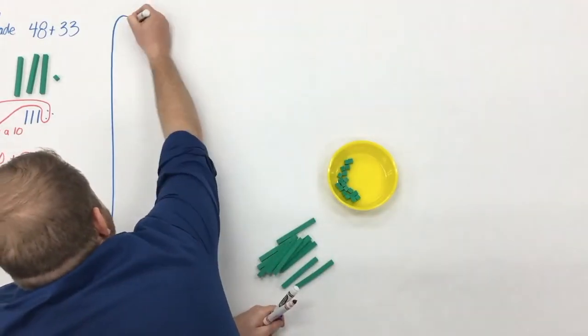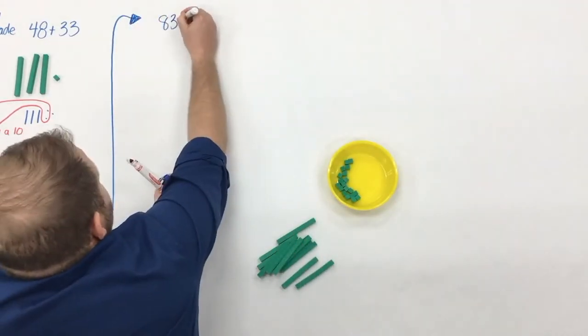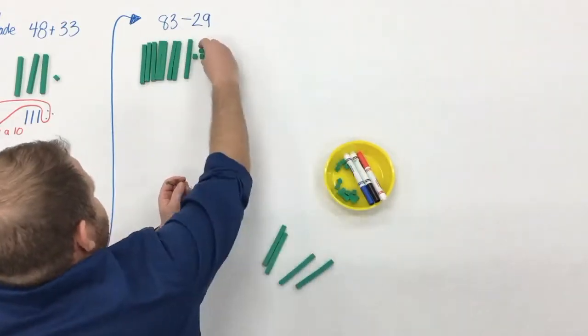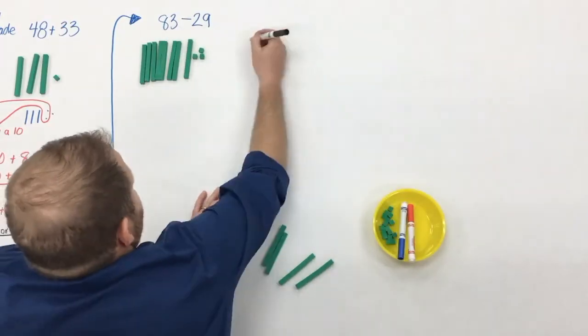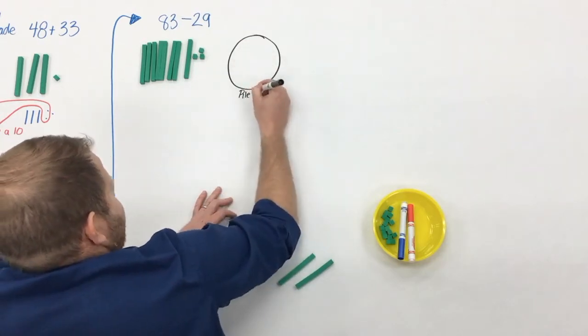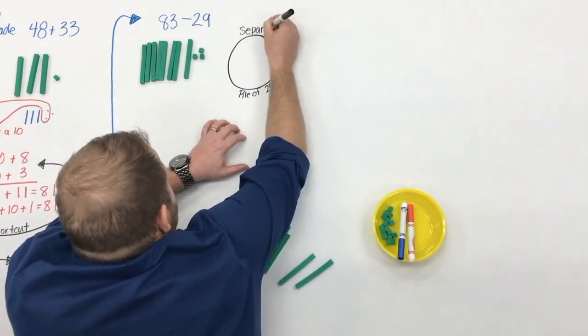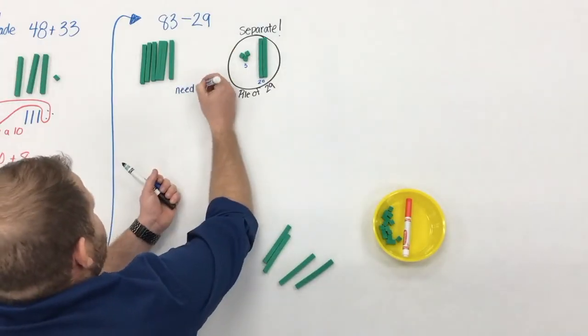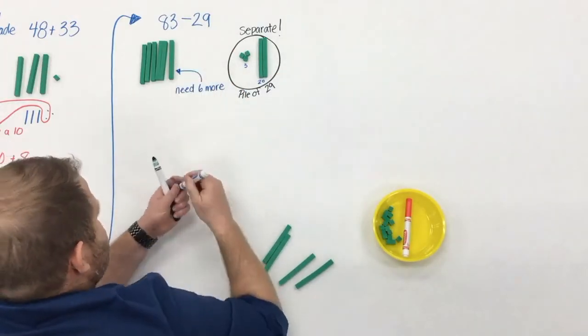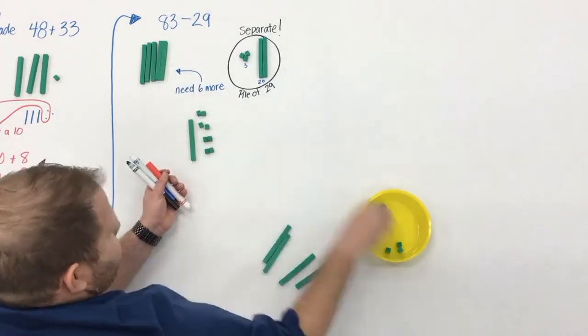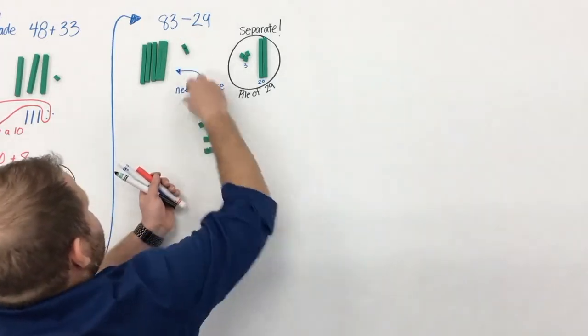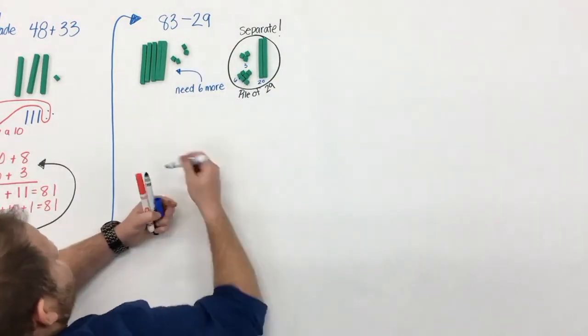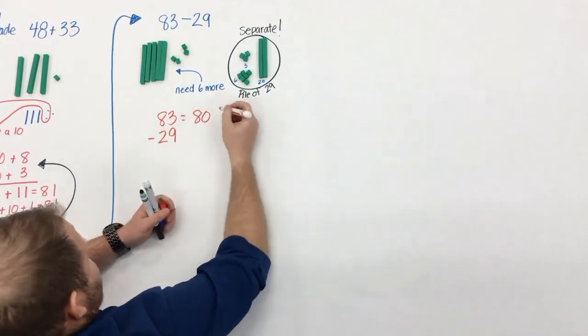So that works for addition, but does it work for subtraction? Well, we want to try and use models that continue to work the same and consistently throughout math. We don't want them to expire. So here we want to have 83 and we'll go back to that separating model. We want to put 29 inside there. Well, we need six more. So this is a really big understanding for students where they make that fair trade and that idea of unitizing. So now we can take the six from the 10 and we're left with four.